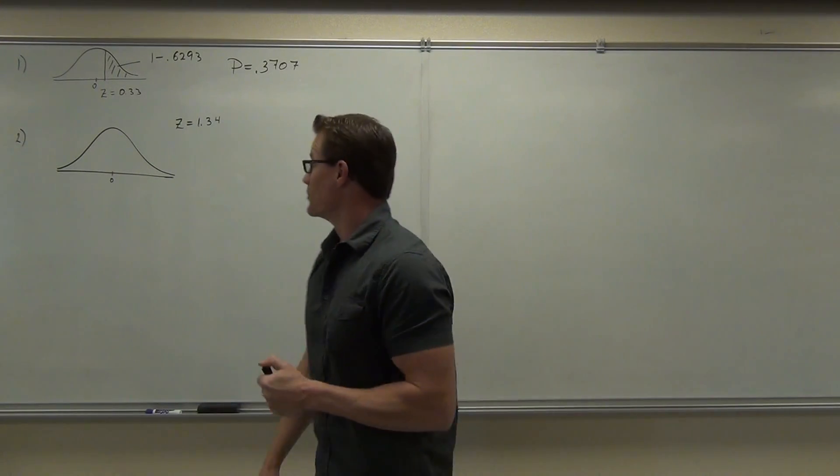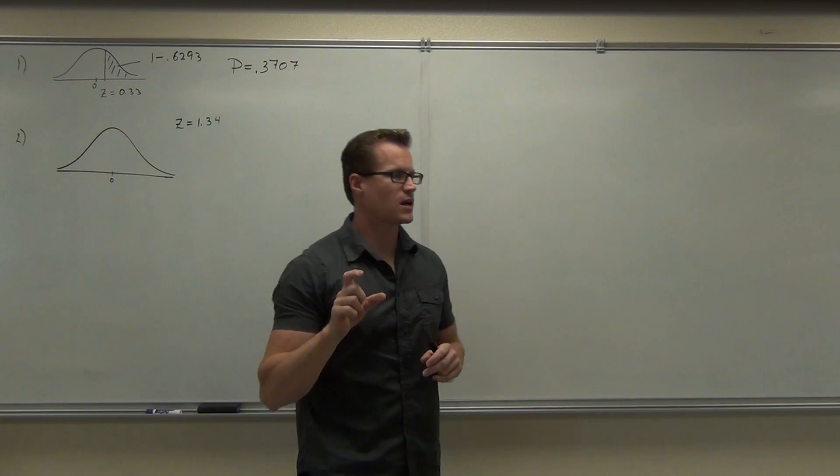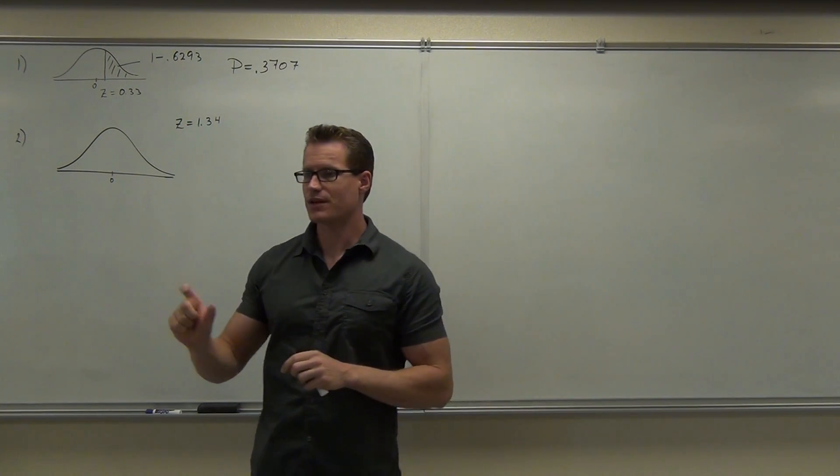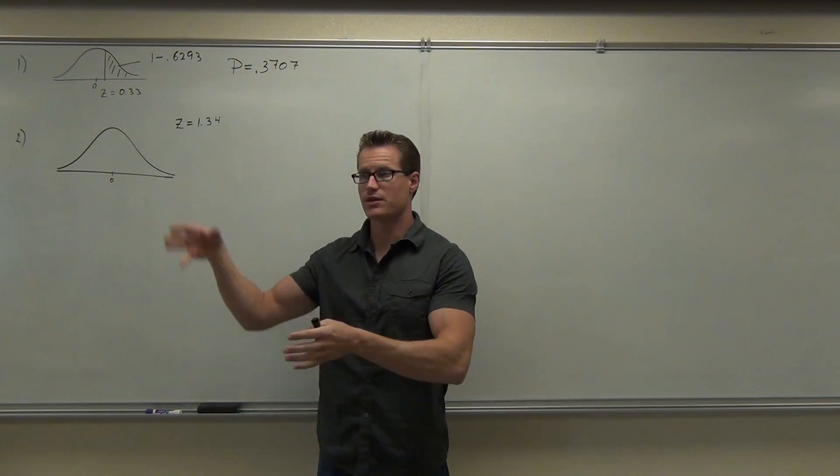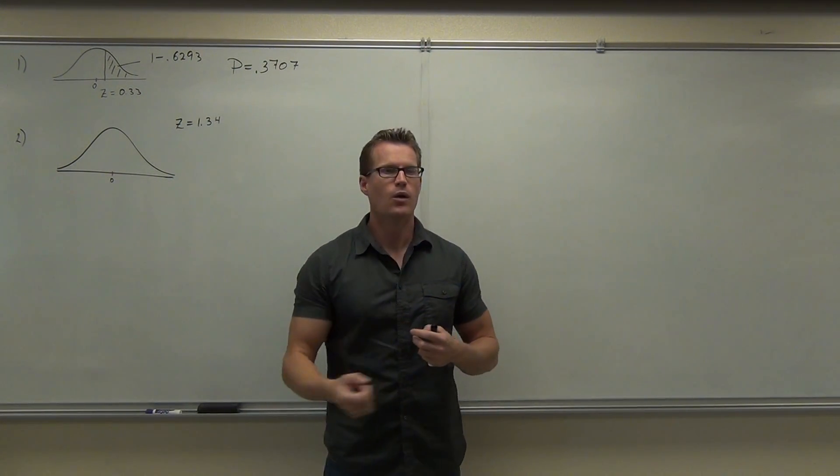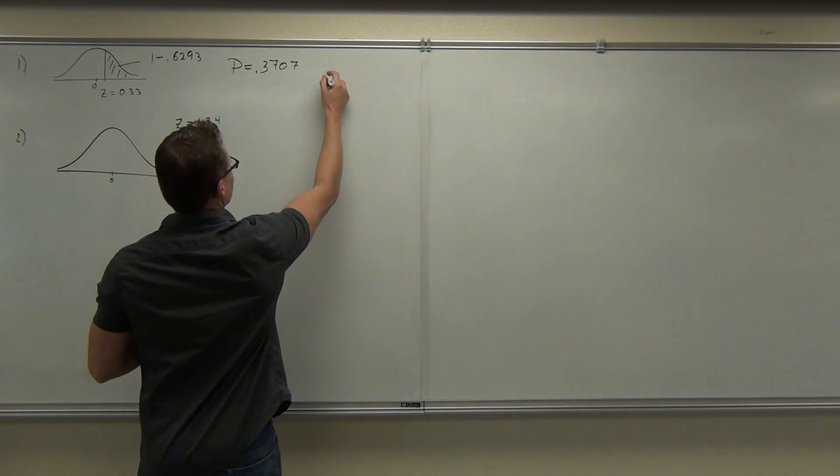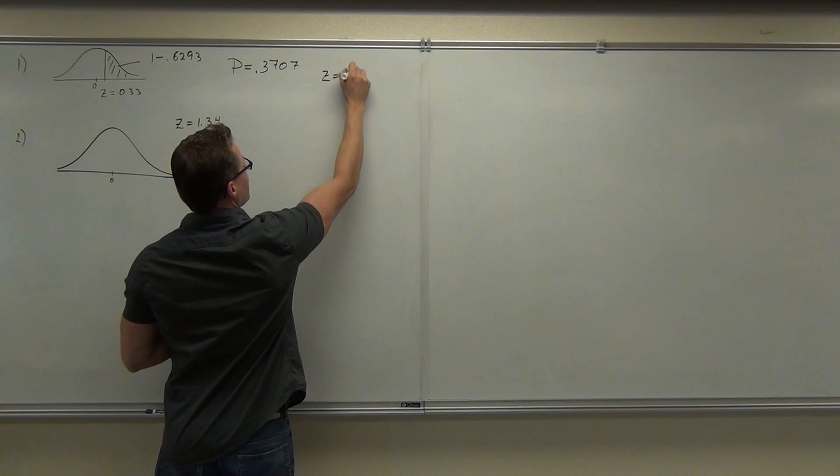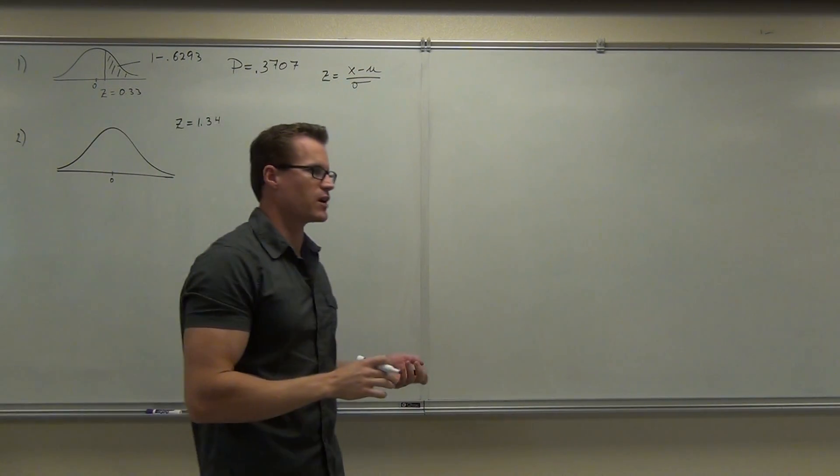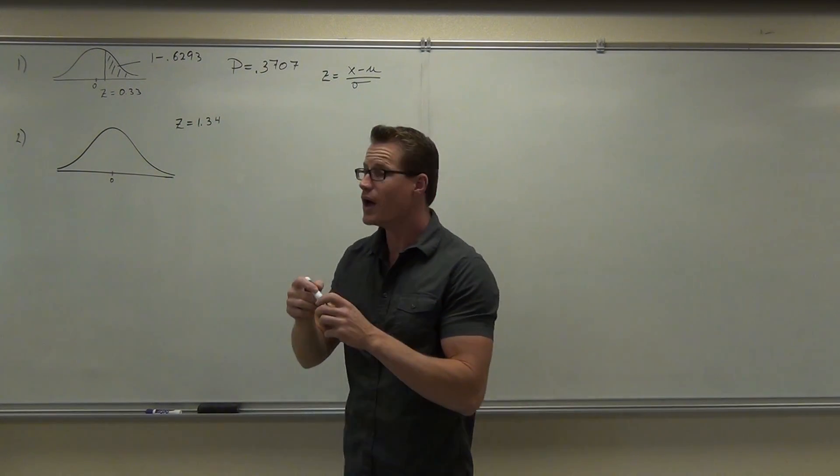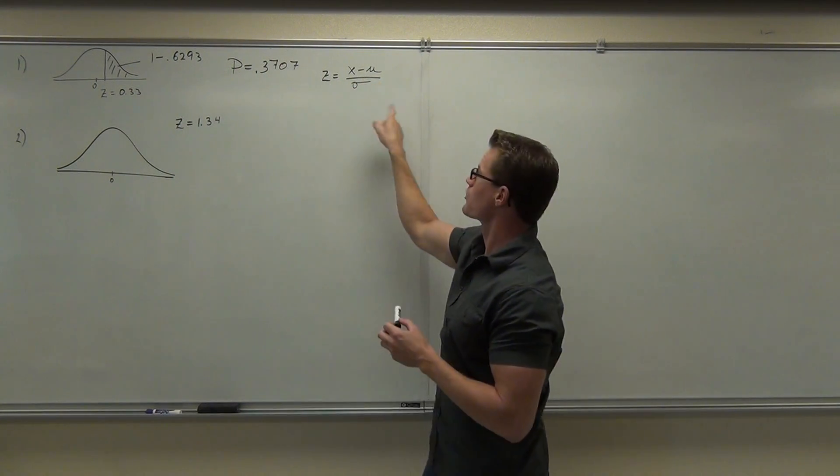So let's continue. We're looking at these two examples and we're comparing them. The first example was the weight of a single individual, the 175 pounds. We're finding out the probability of randomly selecting one male out of this population and they will weigh more than 175 pounds. We used the z-score x minus mu over sigma because we're dealing with one individual guy.